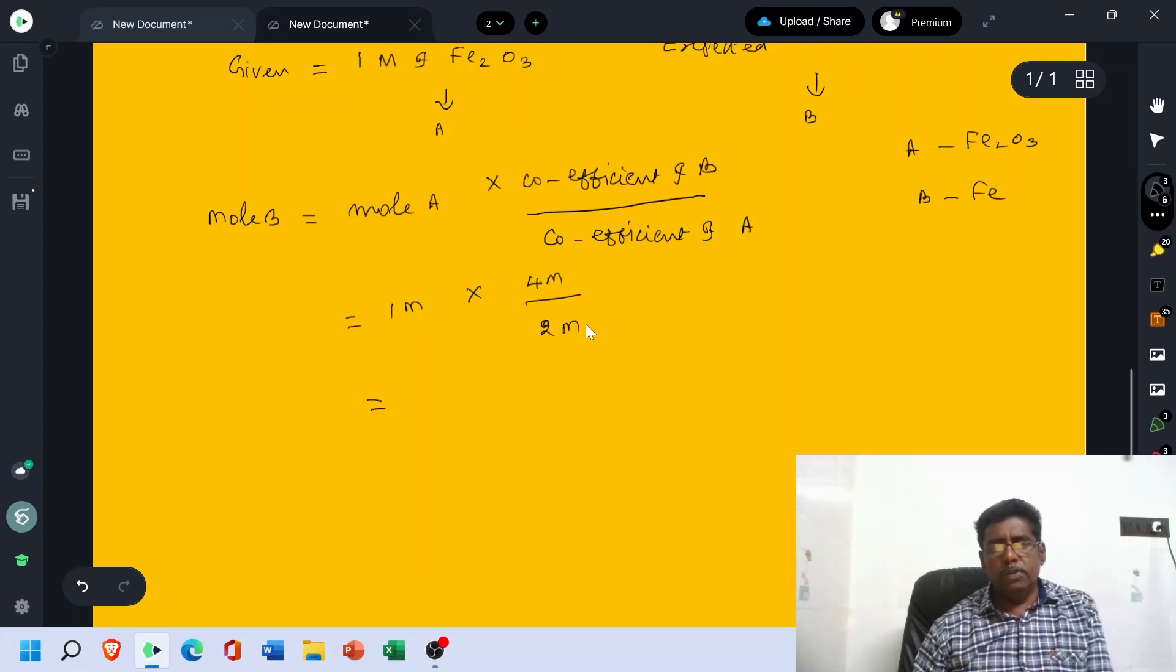So the result is 2 mol. 4 by 2 is 2, 2 times 1 is 2. So, 2 mol of Fe.